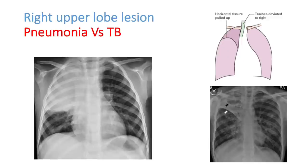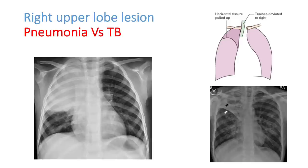This x-ray shows right upper and mid zone homogeneous opacity. You can see the interlobar fissure is sagged down — that is because it is an acute lesion with edematous structure, as in acute pneumonia. The trachea is slightly deviated and the clavicles are not equidistant, which is due to patient positioning. If the upper mediastinum is deviated towards the lesion with normal positioning, you can also suspect collapse. But here, it is mostly due to pneumonia.